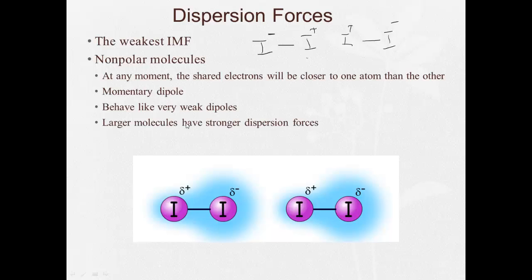Larger molecules have stronger dispersion forces. So that's why since iodine is larger than chlorine, iodine is going to be a solid at room temperature because of these stronger dispersion forces.